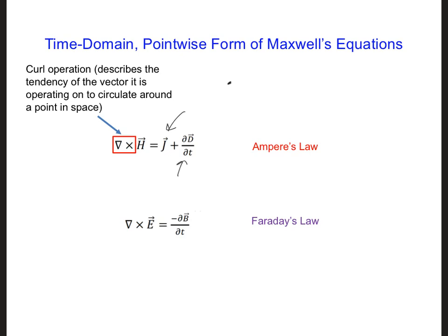Similarly, for Faraday's law here, if we have a time-changing magnetic flux density B at the spatial position of interest, there will be circulating electric fields around that position.